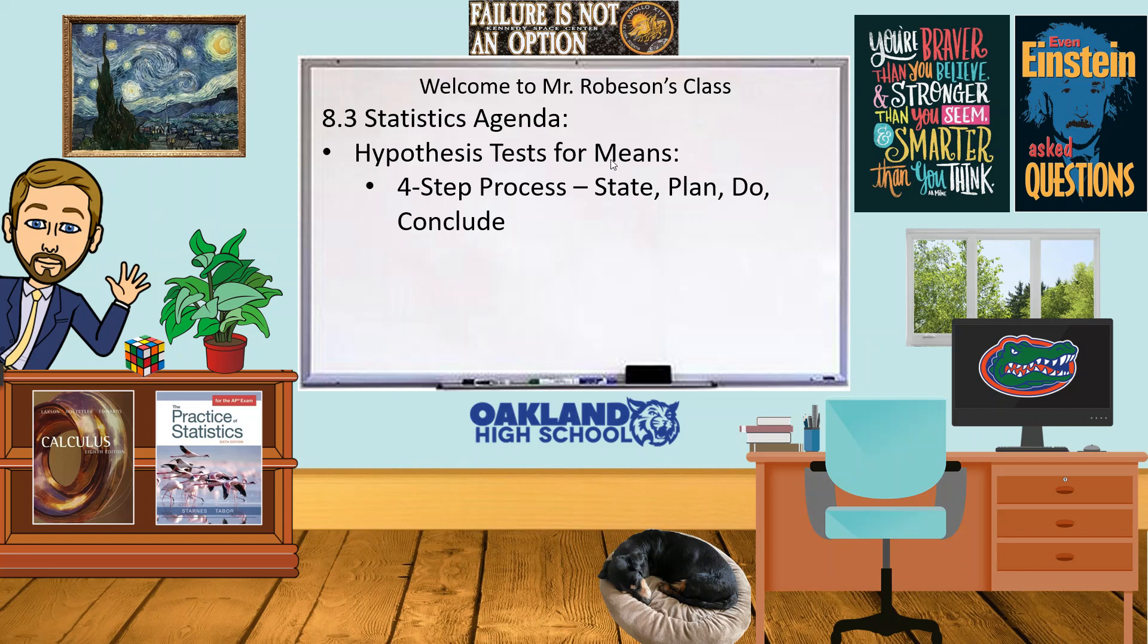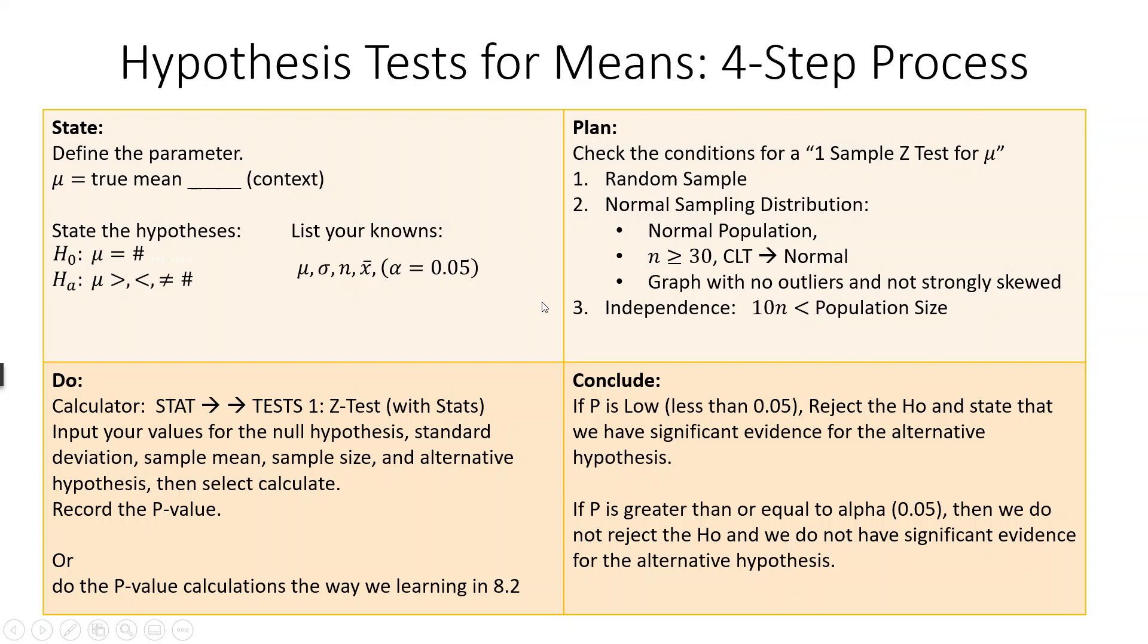Now that we've gone over the preliminary stuff for a hypothesis test for means, we're going to put it all together and do our four-step process just like we did with proportions: state, plan, do, and conclude in our four boxes. So here they are, our four boxes.